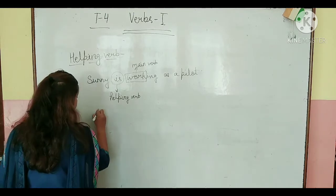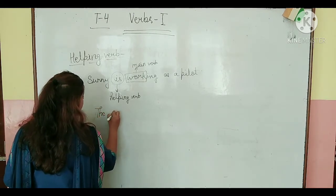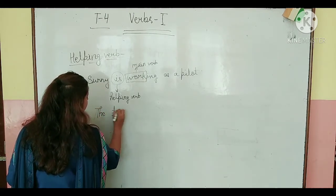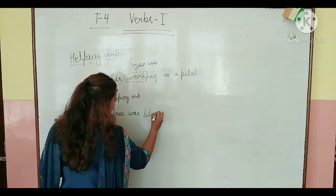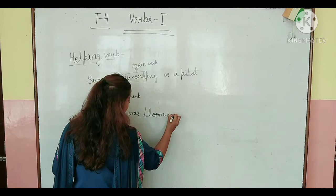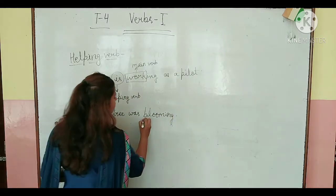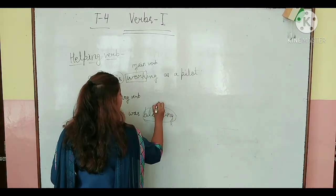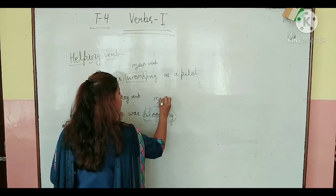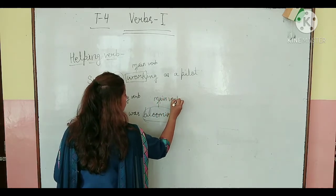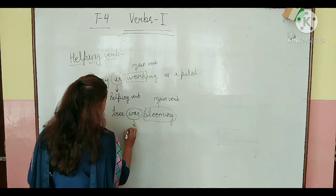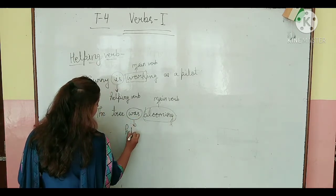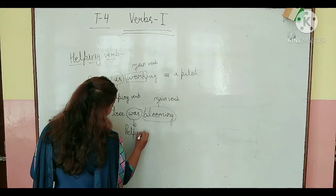Now come to the next sentence. The tree was blooming. So here blooming is a main verb. Moving to your main verb is the helping verb, that is 'was'. Was is your helping verb.